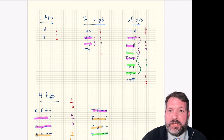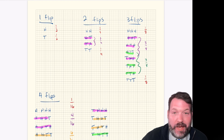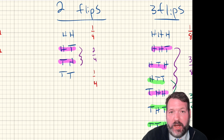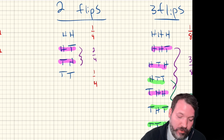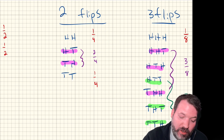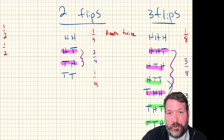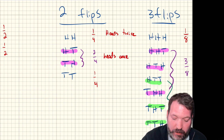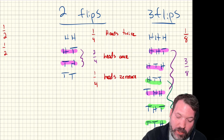I started to think through what happens if we simplify to a single flip — yes, half the time heads, half tails. For two flips using the tree branch diagram, we get four outcomes: both heads, heads then tails, tails then heads, or both tails. We can aggregate these: there's a one-fourth likelihood heads comes up twice, a two-out-of-four chance it comes up once, and a one-in-four chance it doesn't come up at all.